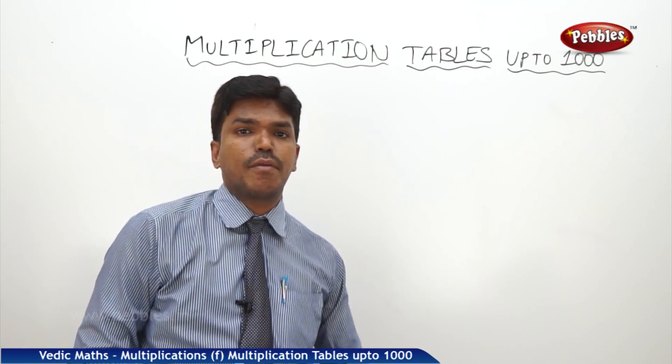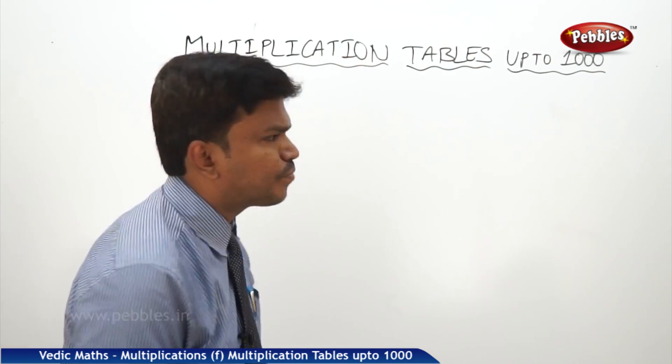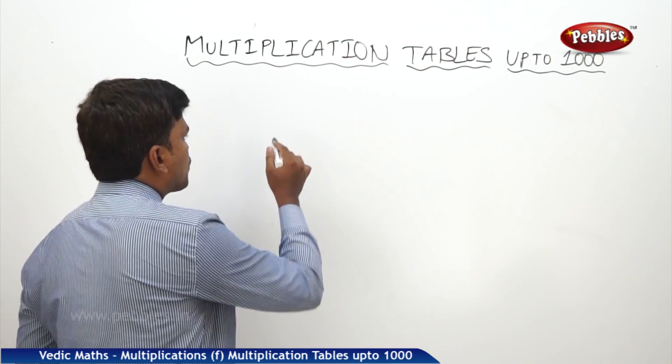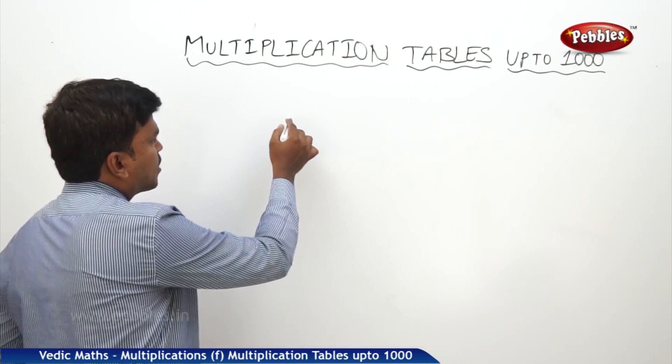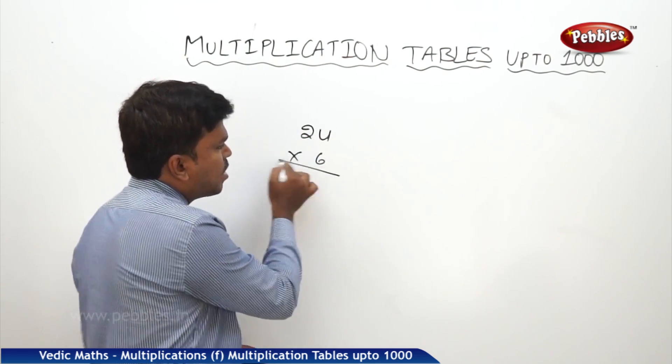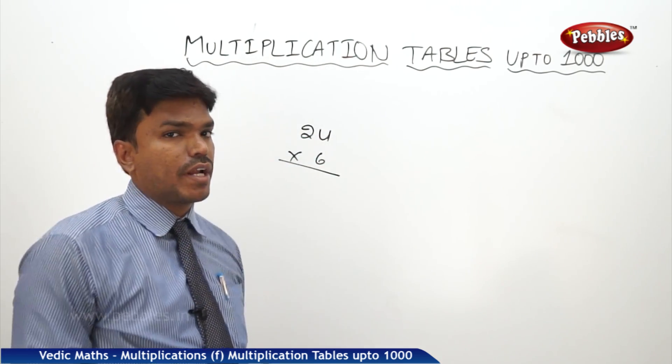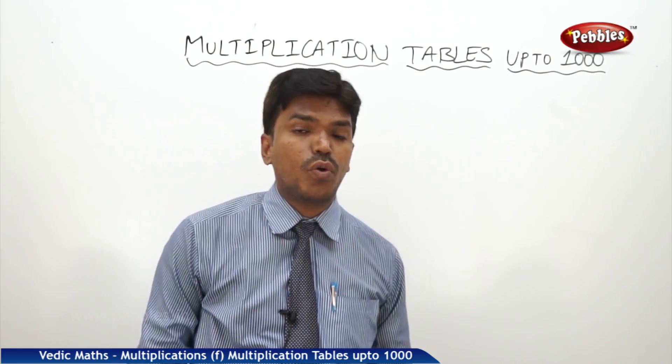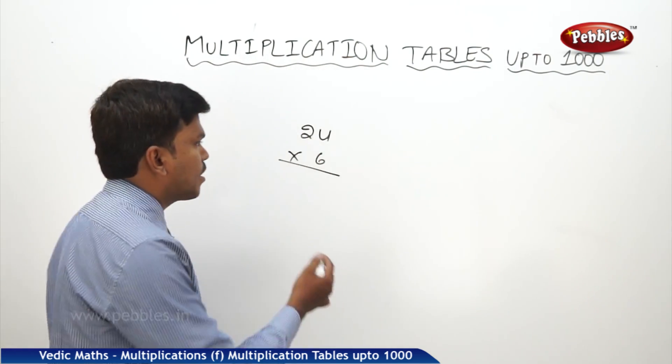We'll start how to calculate up to hundred tables first. Suppose if I want to multiply 24 into 6 times. Do you know 24 table? No, even I don't know. But even if you don't know 24 tables, you can easily calculate it in the mind.